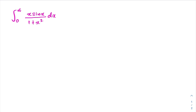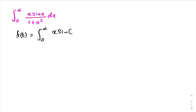First, I am going to define a function f(t). f(t) is equal to the integral from zero to infinity of x times sine of xt over one plus x squared dx.